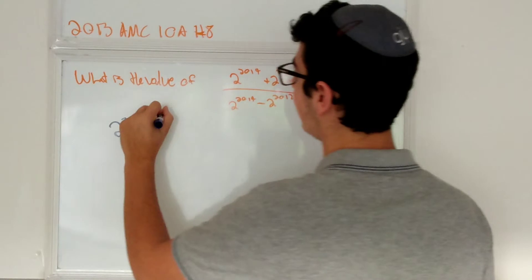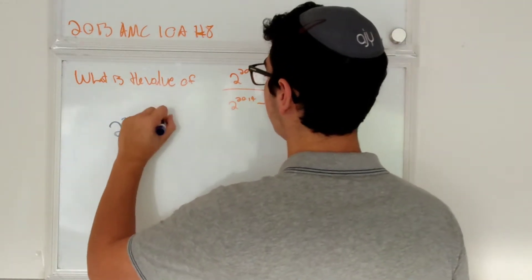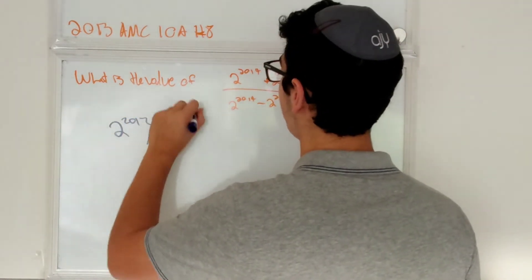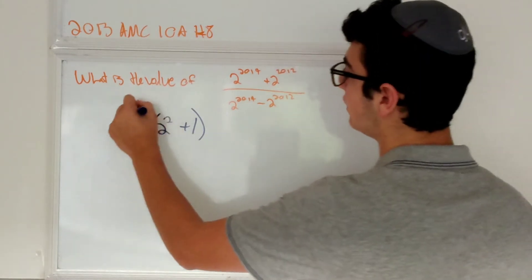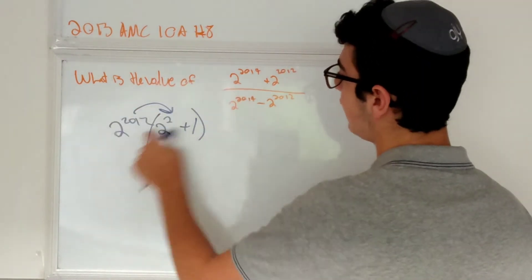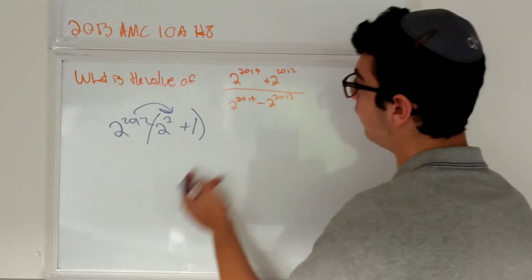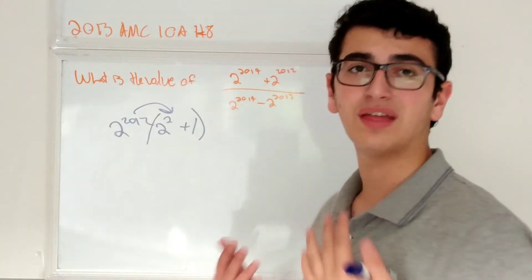See, I can rewrite this as 2 to the 2012th times 2 squared plus 1, because when we use the distribution property, that becomes that. And 2 to the 2012th times 1 is just 2 to the 2012th.